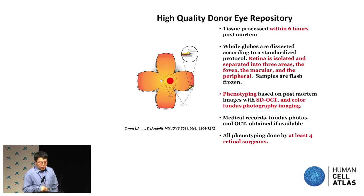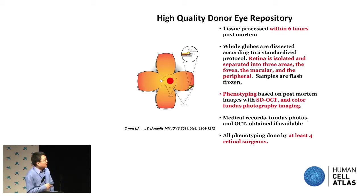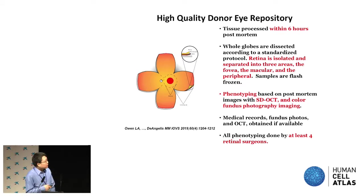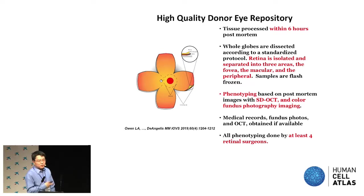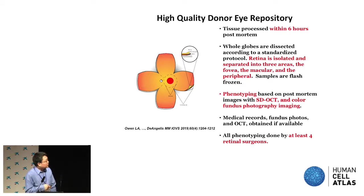We separate the retina into three regions: fovea, peripheral, and the ring of macula in the middle. Since many donors haven't had their eyes examined regularly by ophthalmologists, it's important to phenotype them, because many aged individuals have conditions they're not aware of. So before we do dissection, we do OCT and fundus imaging, and the record is sent to ophthalmologists to review and cross-check.